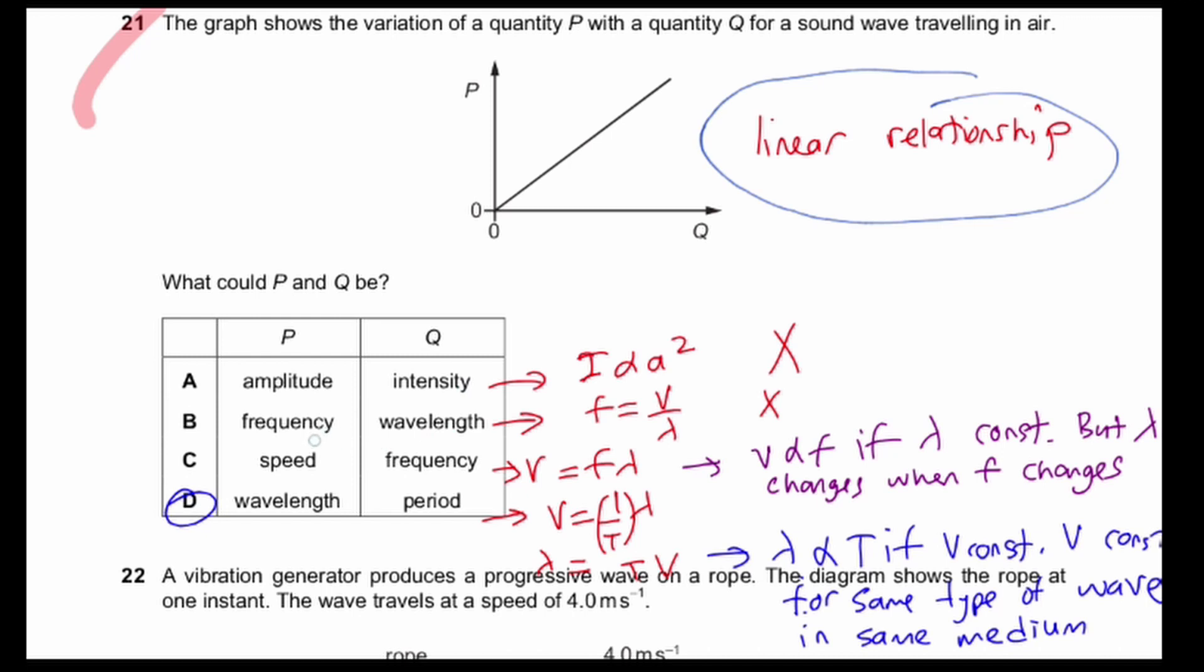However, if you look at the next one, F and wavelength, we know the formula F equals V over lambda. F and lambda are actually inversely proportional, so it's not a linear relationship. C and D are actually linear relationships.